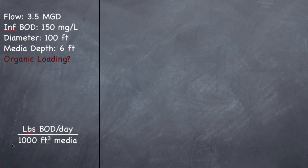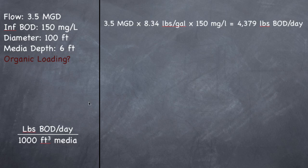So for a second, I want you to just ignore this 1,000 part. And when you have cubic feet, that's just a volume. So ignore this 1,000 part for right now. But first, we're going to figure out how many pounds of BOD per day I have. So I go ahead and take 3.5 MGD, which is my flow, times 8.34 pounds per gallon, times 150 milligrams per liter, which is my influent BOD. And so that will give us 4,379 pounds of BOD per day. So that's how many pounds of BOD are coming into my treatment plant and how many pounds I'm putting on my trickling filter.